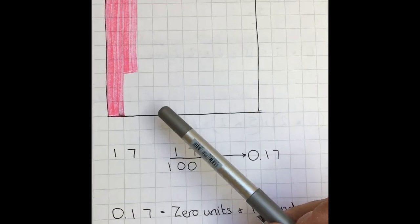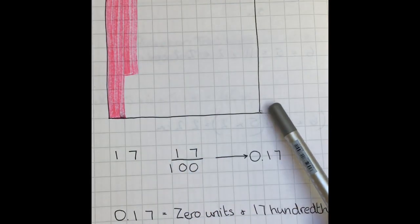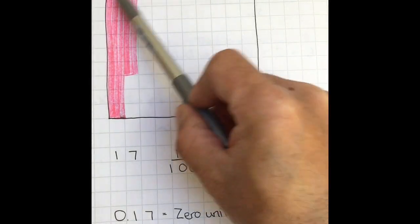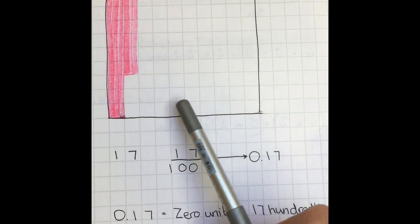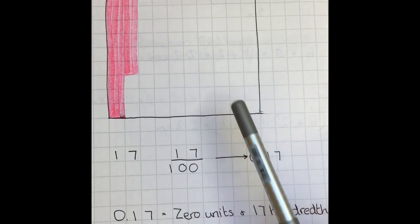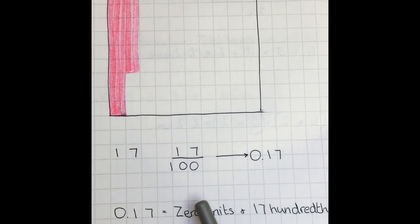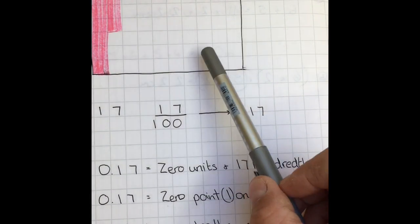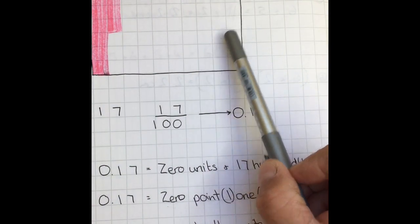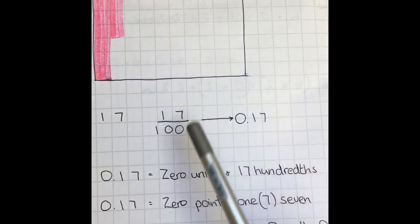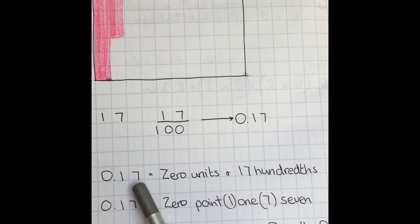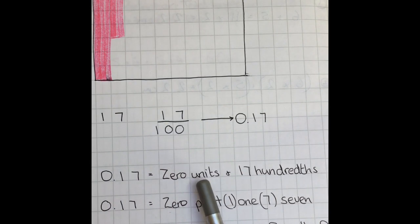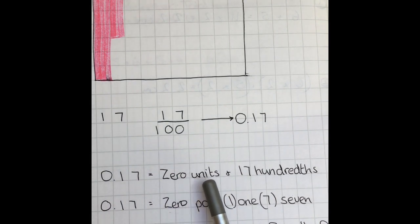A way of writing that as a decimal is 0.17. That is a whole thing, and out of the whole thing, I have zero whole things colored in. The whole square is not colored in. It's divided up into lots of little parts, hundredths in fact. It's divided up into hundreds and I have seventeen of them. So I've got zero units and seventeen hundredths. Zero units because that unit, the whole large square, is not colored in. But I do have seventeen hundredths colored in.